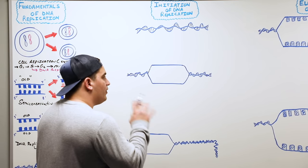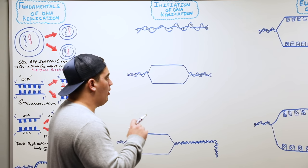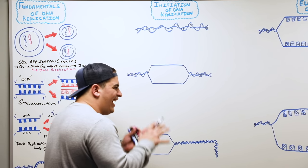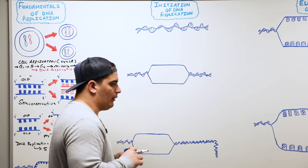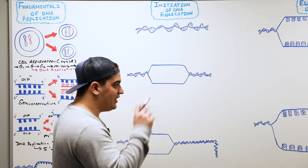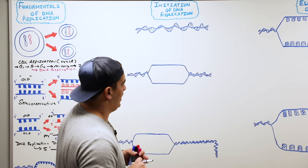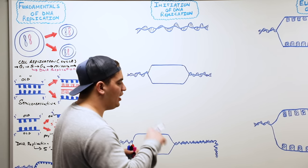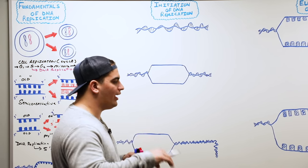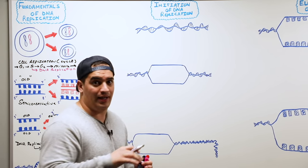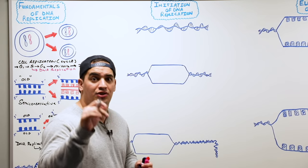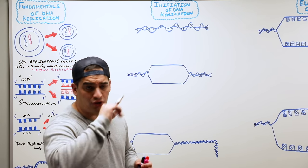Now that we have the fundamentals, let's talk about the steps of DNA replication. There are three stages: initiation, elongation, and termination.